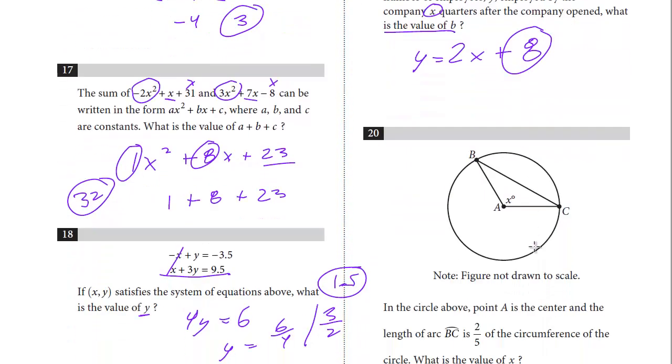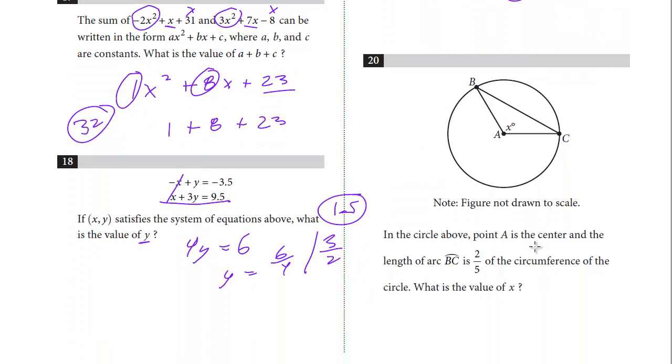Last question, number 20. This is an additional topic in math. You don't see too many geometry questions on the exam. It's not drawn to scale. In the figure above, point A is the center, and length of arc BC is two fifths. So BC, this is two fifths of the circumference. Two fifths of the circumference is BC. And we want to find X.